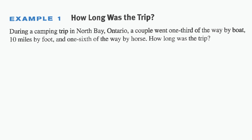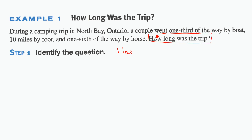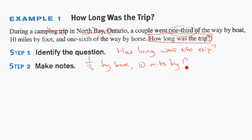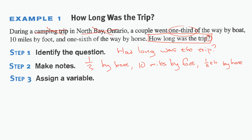Here's an example: during a camping trip to North Bay, Ontario, a couple went one-third of the way by boat, 10 miles by foot, and one-sixth of the way by horse. How long was the trip? Step one — identify the question: 'How long was the trip?' The important information is: one-third by boat, 10 miles by foot, and one-sixth by horse.